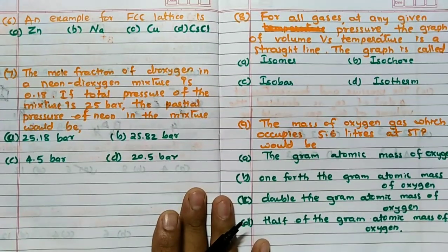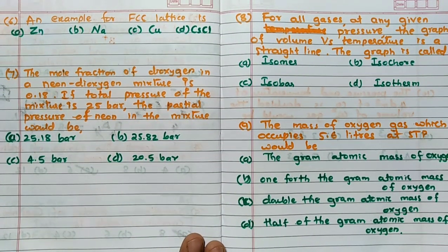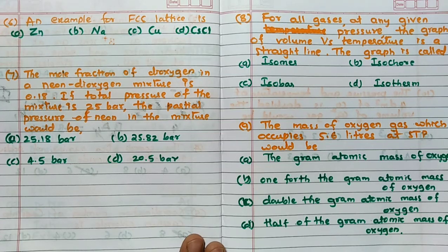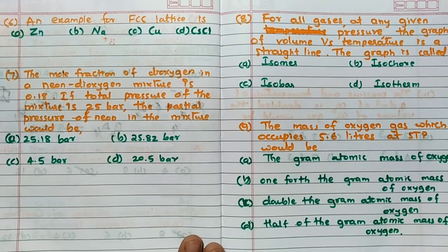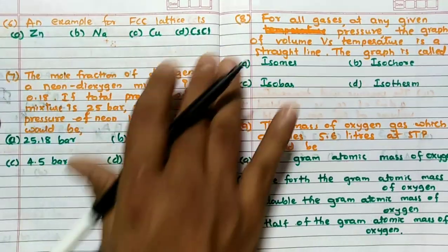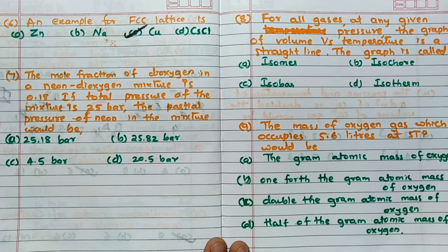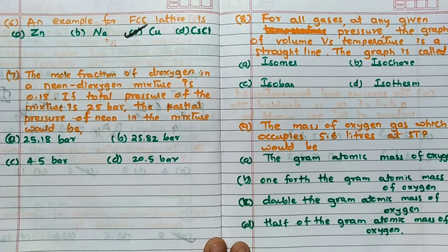Then an example for FCC lattice is - this you have to remember, there is no other way. At least one example for each FCC, BCC, simple cube, HCP you have to remember. So an example for FCC lattice is copper. Copper is having FCC lattice, answer is copper.